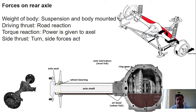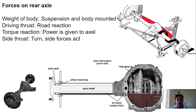The forces acting on the axle are: the weight of the body supported by suspension and body mounting; if it is a passenger vehicle, passengers as well as goods load also comes on the axle, so it should support that. Then the driving thrust — that is road reaction from rough road — goes to the wheel and from wheel to the axle, so it should support the driving thrust. Torque reaction is when power is given to the wheel and that should be taken care of by the axle. And side thrust in case of side forces.